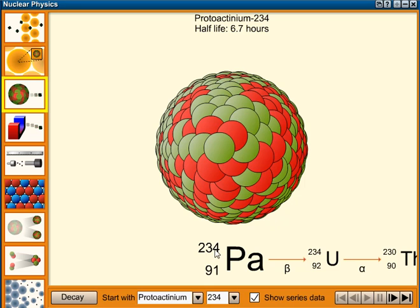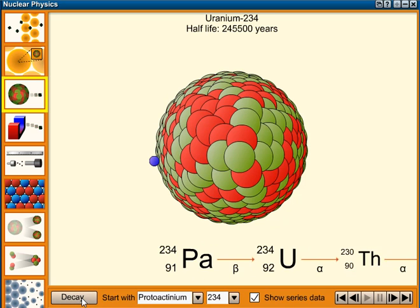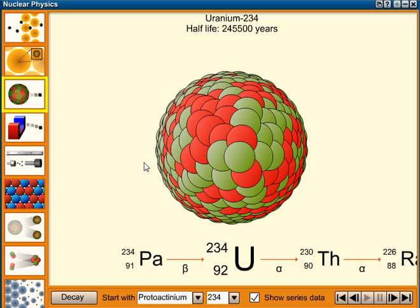Here we have the atomic mass 234 of protactinium-234, and its atomic number is 91, that means there's 91 protons in the nucleus, and the total number of protons and neutrons is 234. Now the decay here is going to be beta decay, so if I click decay, off comes a beta particle, which is an electron that comes out of the nucleus when one of the neutrons turns into a proton and the beta particle.